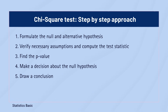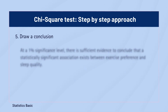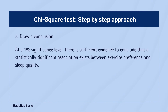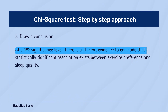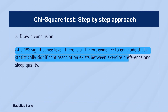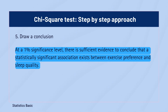In the fifth and final step, we will conclude the summary of the hypothesis test. Since the null hypothesis was rejected at a 1% significance level, there is sufficient evidence to conclude that a statistically significant association exists between exercise preference and sleep quality. This means the distribution of sleep quality is not independent of exercise preference.